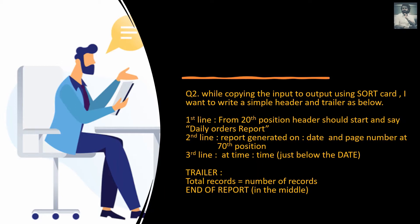The requirement is: in the first line, from the 20th position, the header should start and it should say 'Daily Orders Report'. In the second line, 'Report Generated On' should give the date, and the page number at the 70th position in the second line. In the third line, it should give the time — positioned just below the date in the second line. In the trailer, it should give total records and the number of records, and in the middle of the report it should say 'End of Report'.